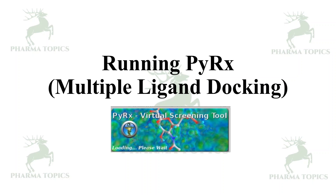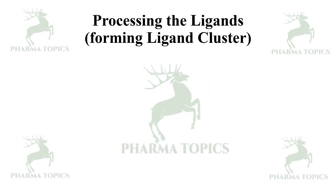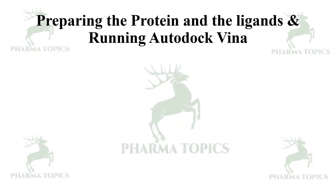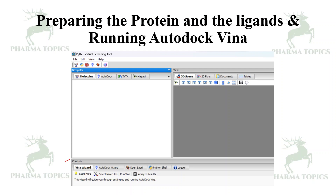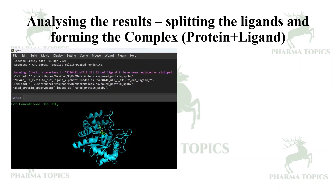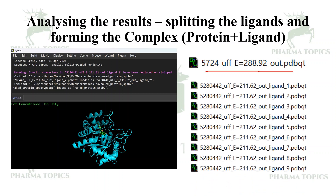Next is running Pyrex — it is for multiple ligand docking. First, you have to process the ligands and form a ligand cluster. Suppose you have 100 ligands — you have to use Biovia Discovery Studio to cluster all these ligands as a single file. Then you run AutoDock Vina, and there is a result file called Vina result. All 10 poses of the results will be compiled as a single file. We have to split the protein and ligand poses using VinaSplit. We will use PyMol to frame the complex file. The file will be generated as a single file called out.pdbqt. To split it, we will be using VinaSplit.exe, which we will discuss in the workshop.